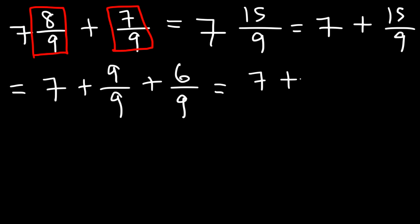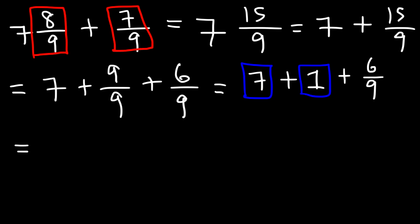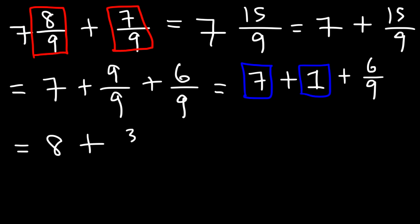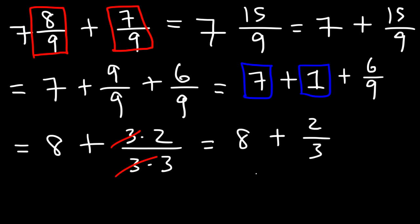9 divided by 9 we can replace with 1. And then we have 6 over 9, which we can reduce. Let's add 7 and 1 together — 7 plus 1 is 8. Now 6 over 9, I'm going to rewrite that as 3 times 2 over 3 times 3. 3 times 2 is 6, and 3 times 3 is 9, so I can cancel a 3. And so I have 8 plus 2 over 3, which gives a final answer of 8 and 2 thirds.